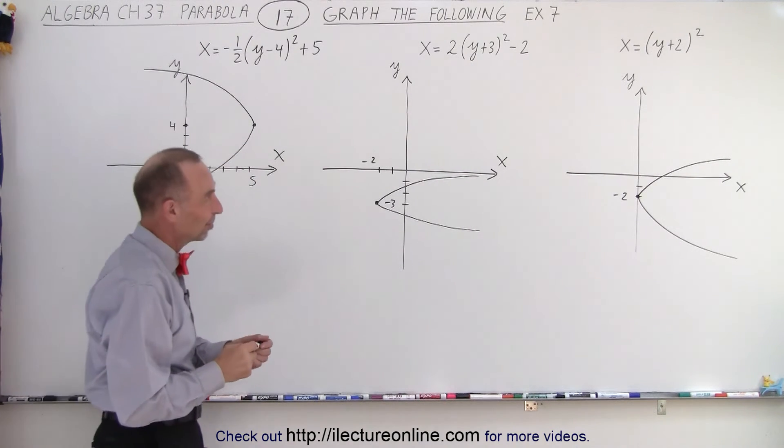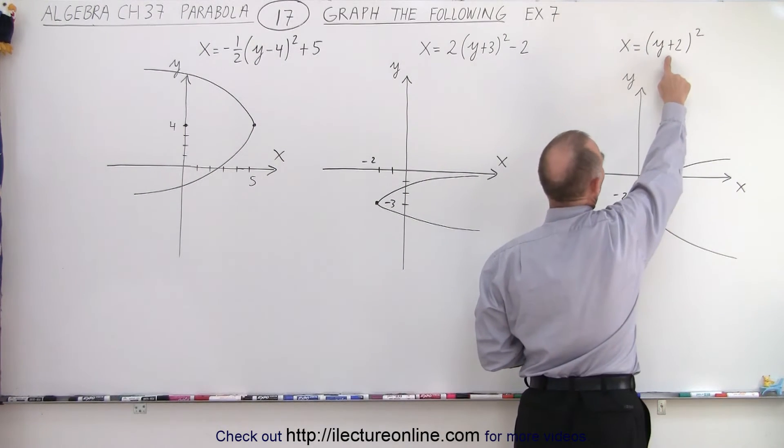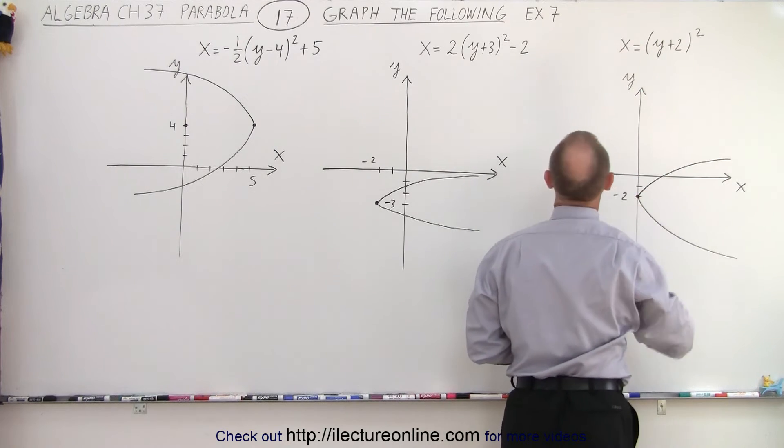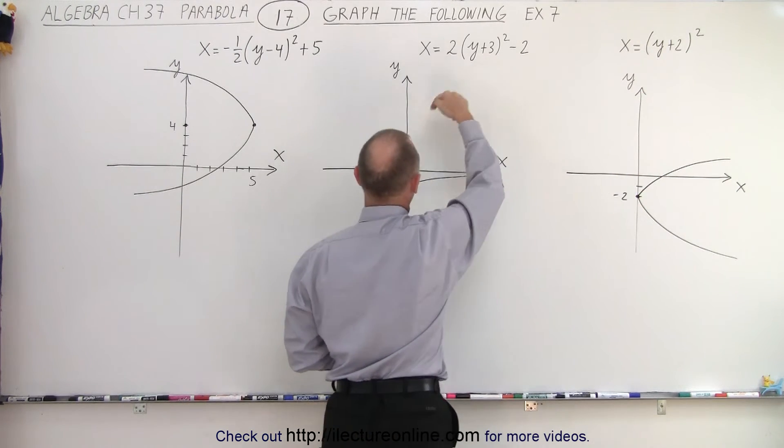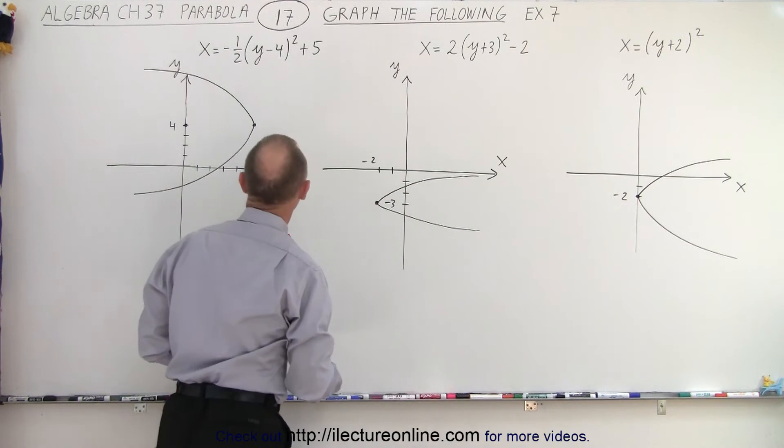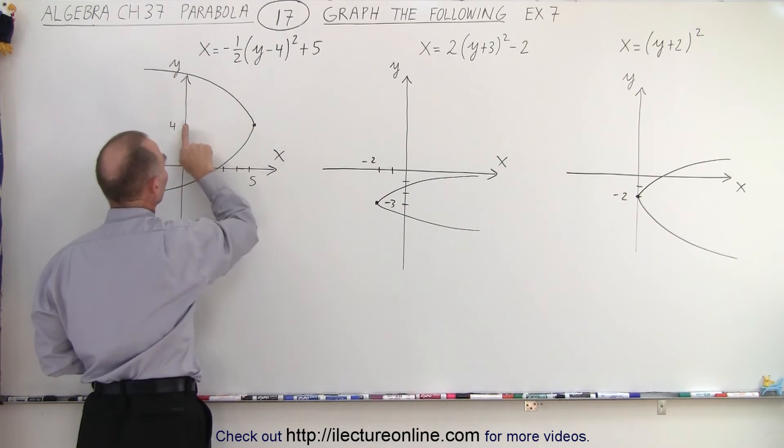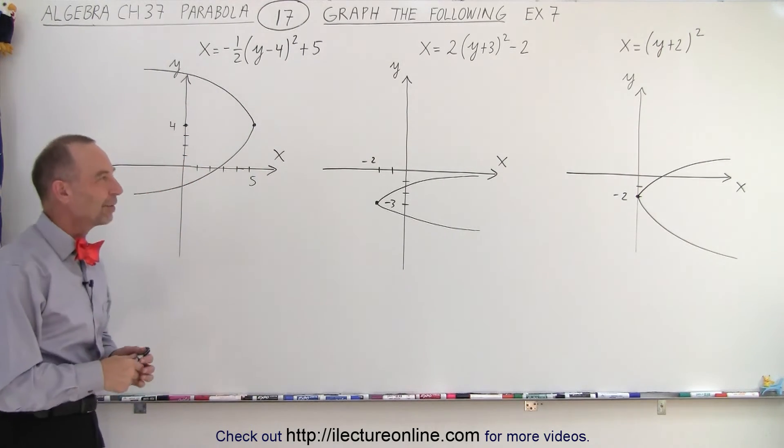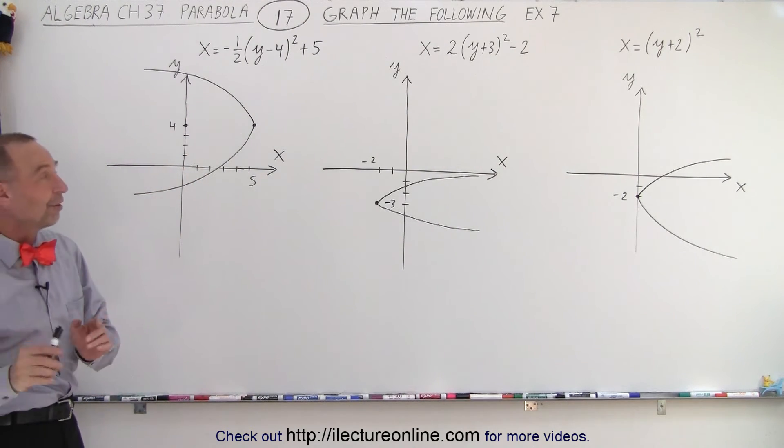So again, let's check this picture. We did this correctly. So here we have a shift along the y-axis. And we have a negative shift. We go down 2. Here we have a shift of 3 in the y-direction and a negative 2 in the x-direction. Here we have a shift of plus 4 in the y-direction and plus 5 in the x-direction.